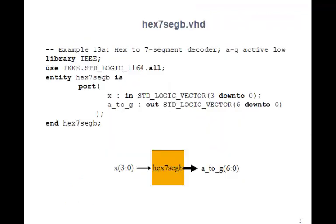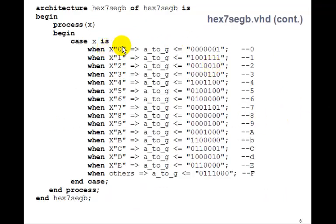We could also do it a different way. Here's the same entity. But now we can just write the hex value 0 to F, or E in this case, plus others. And the way you write hex values in VHDL is with this capital X. So X double quote 2 would be hex 2. X double quote 9 is hex 9. X double quote E is the hex E. These are all the same, so this is just another way of writing the case statement for a seven-segment decoder.